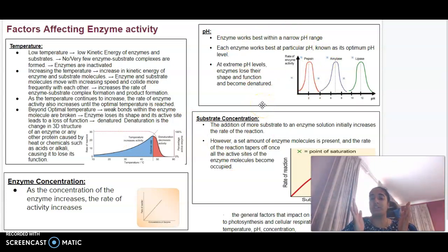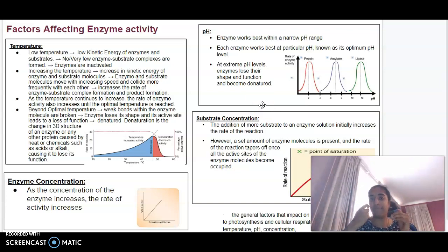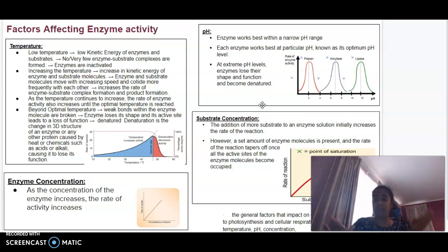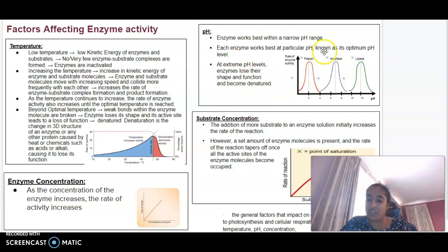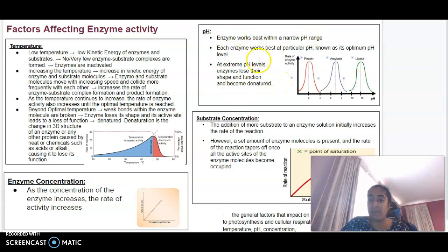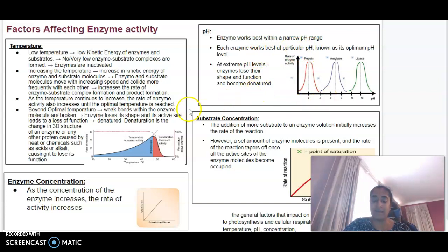pH works similarly to having a high temperature. If the pH is too low or too high — lower or higher than the optimum — that will also denature the enzyme. pH works within a narrow range to affect the enzyme, and each enzyme works best at a particular pH level. Too low or too high will denature the enzyme.